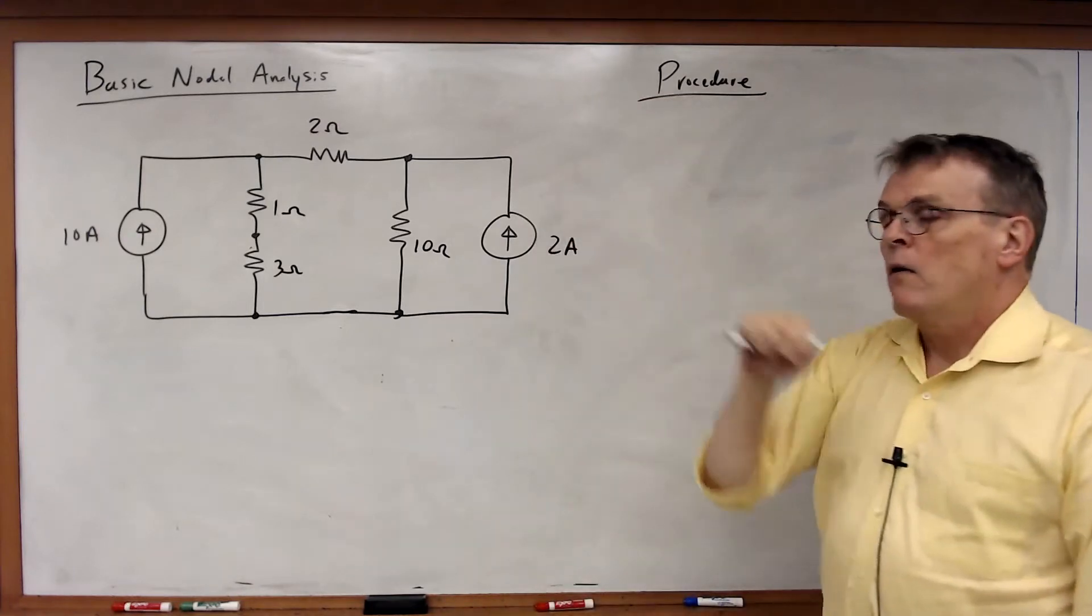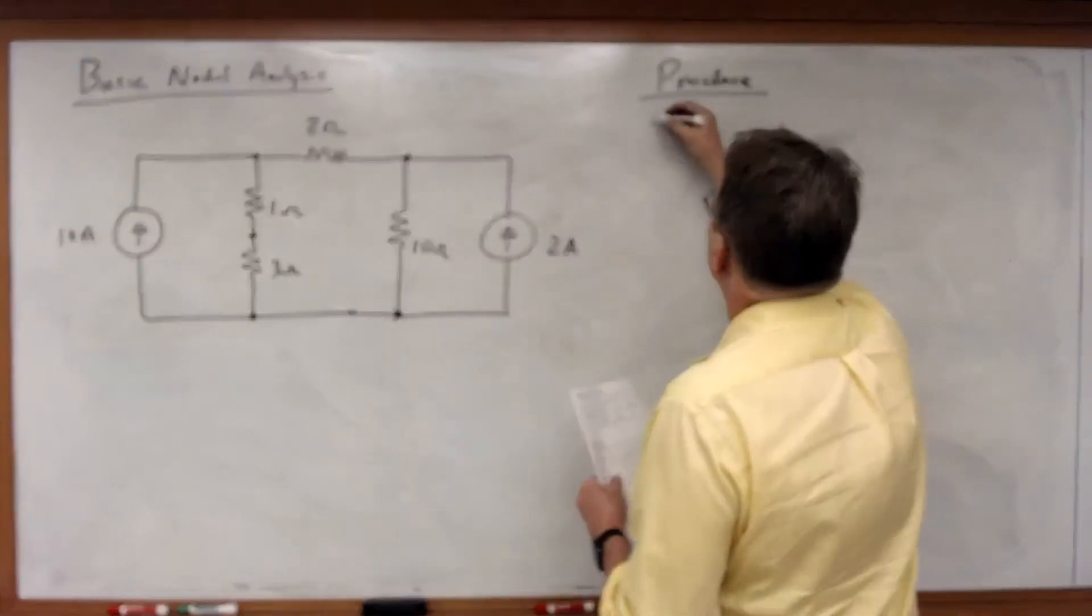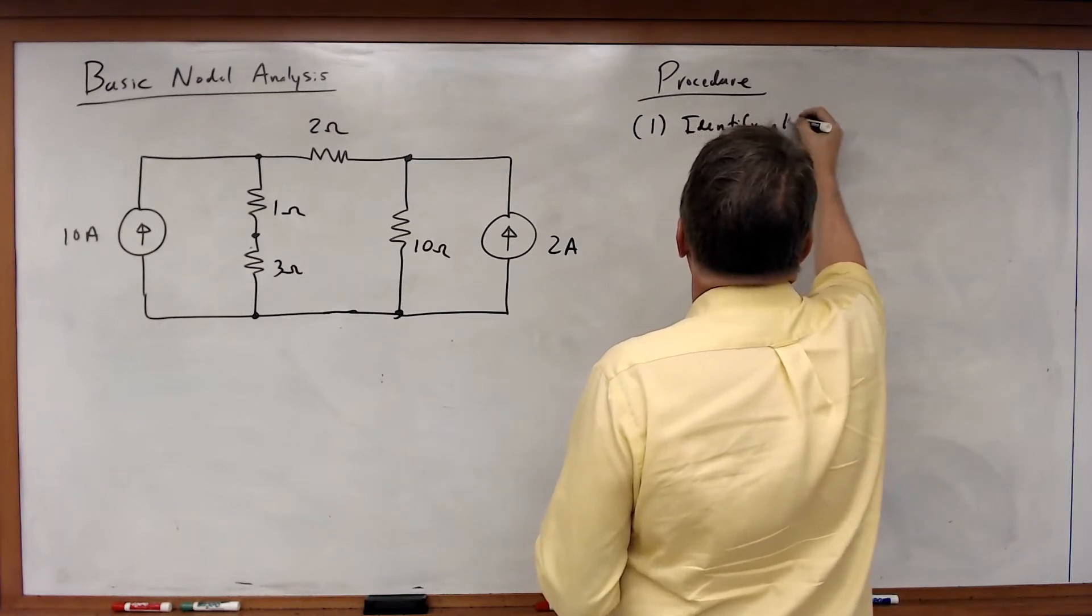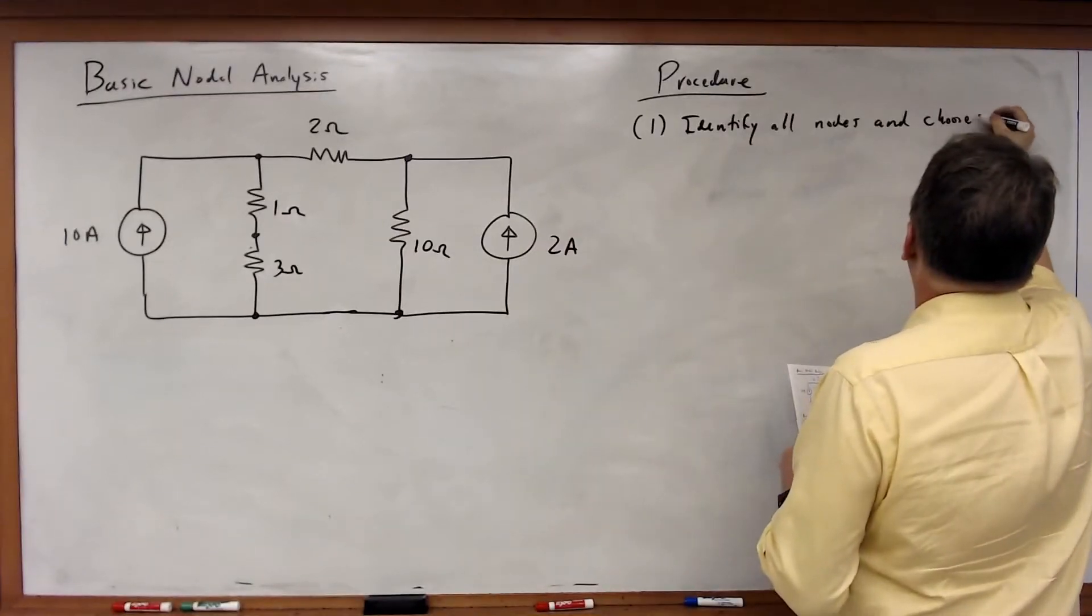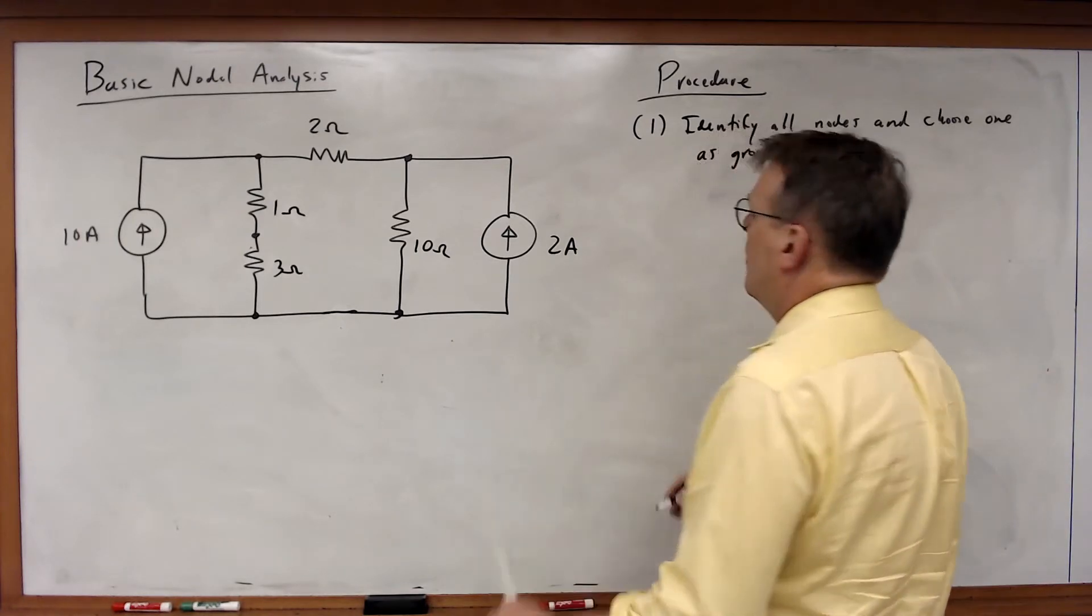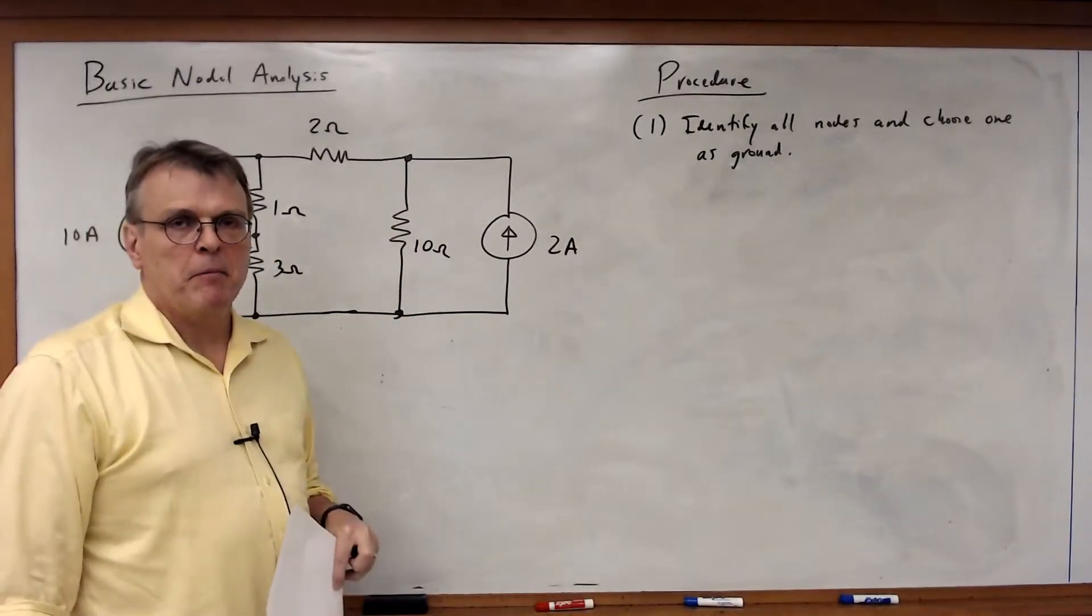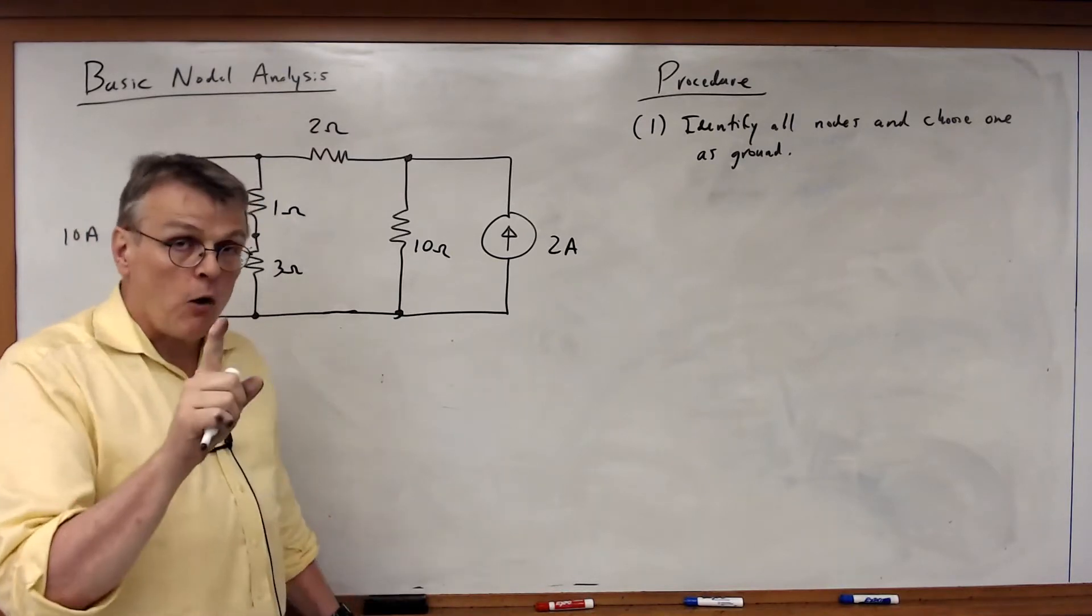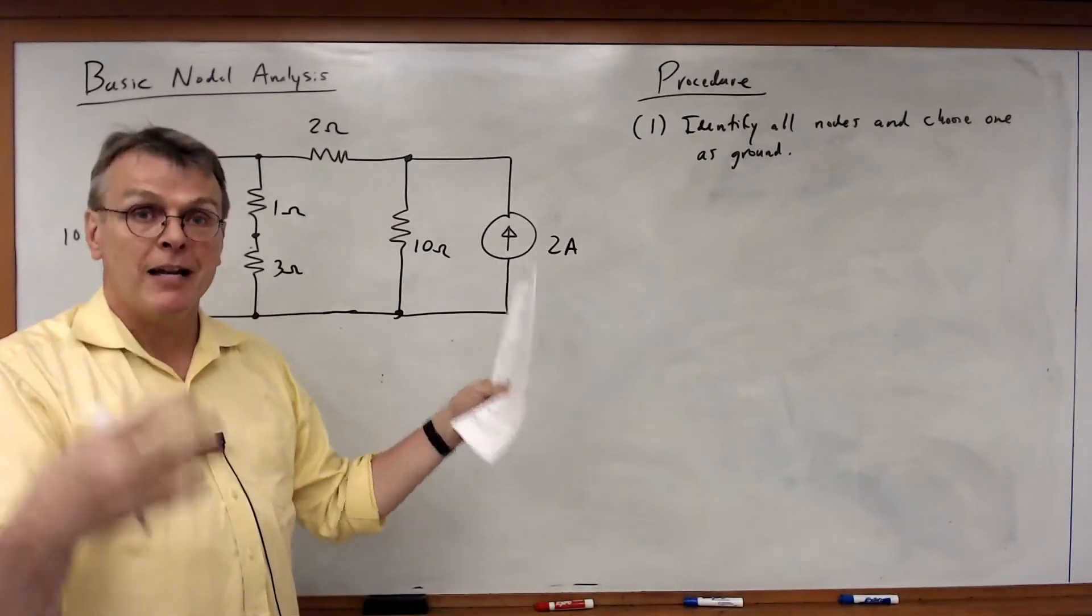So first of all, we need to identify all of the nodes and choose one of them as ground. Now as I said before, any node could be ground, but as it turns out, the best choice for ground is usually, not always, but usually the node that has the most number of branches connected to it, the most elements connected to it.